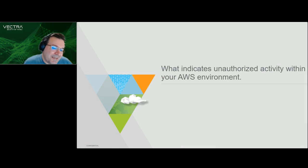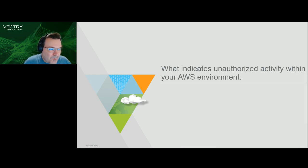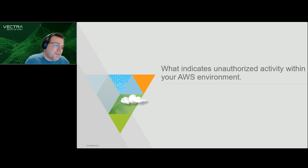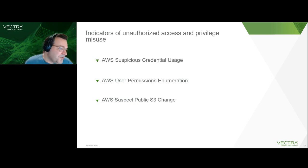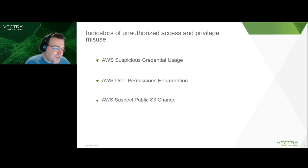So, what indicates unauthorized activity within your AWS environment? I'm going to be a little bit flexible with that conversation, because as I mentioned before, you can have two sides of a particular detection: one is malicious intent, the other is some sort of benign or understood activity. I'll look at three specific detections: suspicious credential usage, AWS user permission enumeration, and AWS suspect public S3 change. The last one is probably fairly self-explanatory; the other two need a bit of hand-holding.